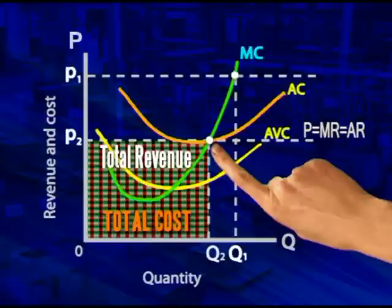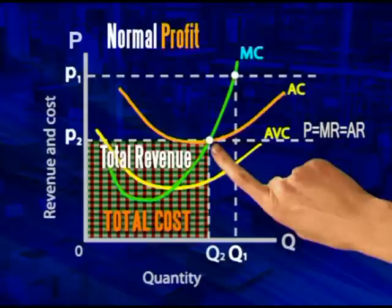In other words, total revenue is exactly the same as total cost. Here, the firm is making normal profits.